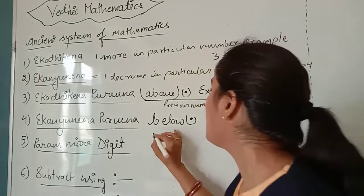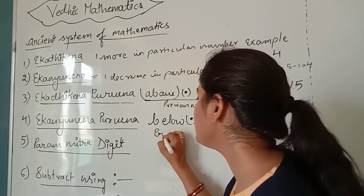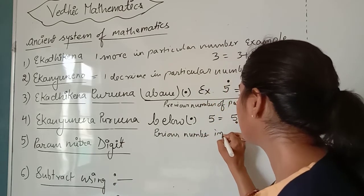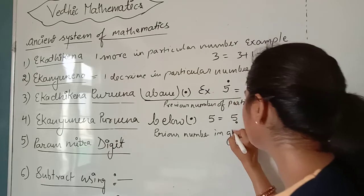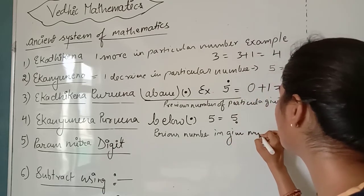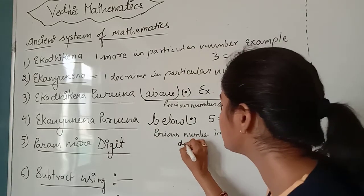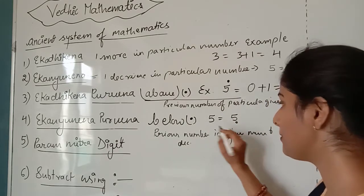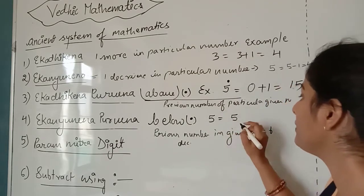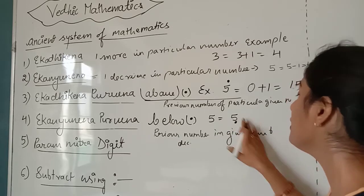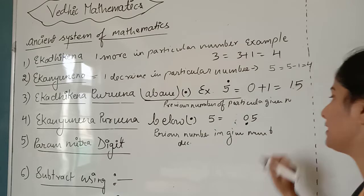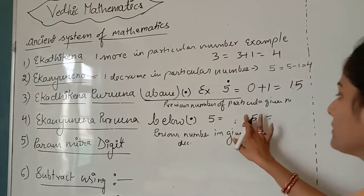Purvin means previous number in a given number where we decrease. Suppose we have the number 5. We apply this to the previous digit, that means we apply it to 0 before 5. In zero there is nothing, so for another example,